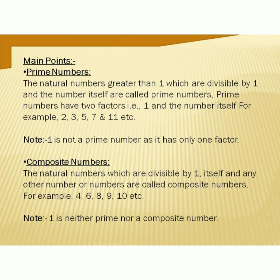Next point: composite numbers. Composite numbers are just the opposite of prime numbers. These are natural numbers which are divisible by 1, itself, and any other numbers, and are called composite numbers. For example, 4, 6, 8, 9, 10, etc. Another important point: 1 is neither a prime nor a composite number.